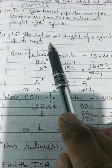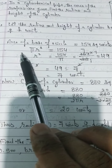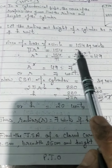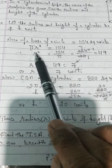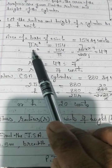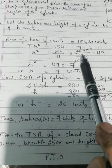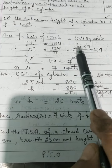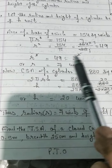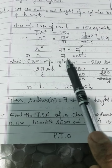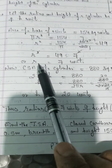Let the radius and height of this cylinder be r and h units. Area of base of circle equals pi r squared = 154 square units. From this, r squared = 154 upon pi = 154 upon (22/7) = 49, which can be written as 7 squared. Therefore r = 7 units — so the radius is 7 units.